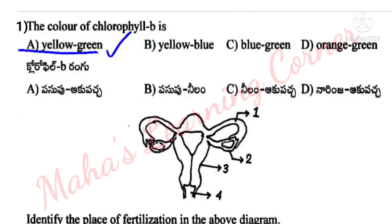Two major kinds of chlorophylls are associated with thylakoid membranes. Chlorophyll A is blue green in color. Chlorophyll B is yellow green in color.